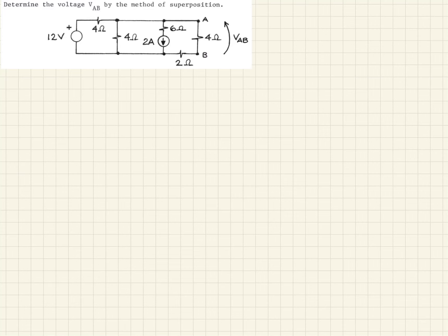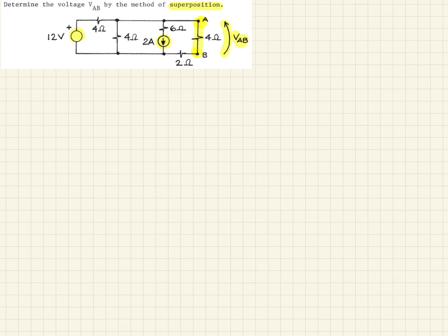Here's a sample circuit that has a voltage source and a current source, and we're asked to use superposition to determine the voltage AB — the voltage across that 4-ohm resistor. Remember, when we do superposition, we consider the contribution from each source separately.